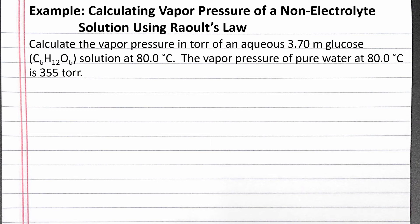In this example, we calculate the vapor pressure of a non-electrolyte solution using Raoult's Law. Our problem reads: calculate the vapor pressure in torr of an aqueous 3.70 molal glucose solution at 80.0 degrees Celsius.